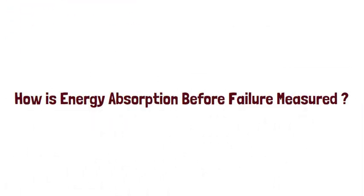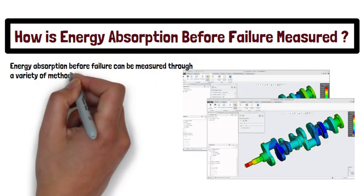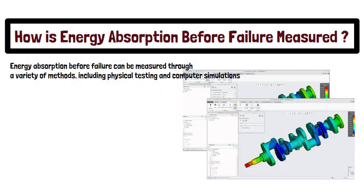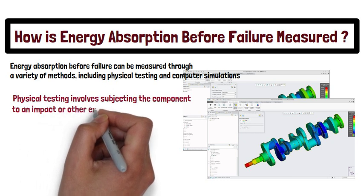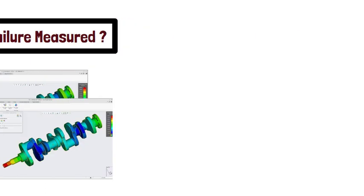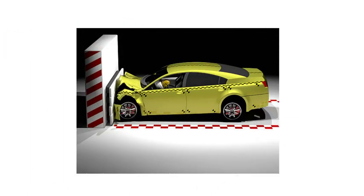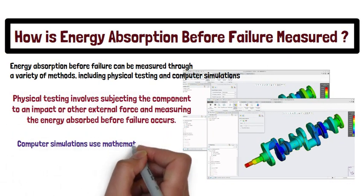Energy absorption before failure can be measured through a variety of methods, such as physical testing or computer simulations. Physical testing involves subjecting the component to an impact or external force. For example, in an automotive crash test, an impact load is applied to the car and the energy absorption before failure is measured.